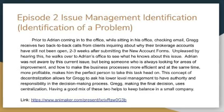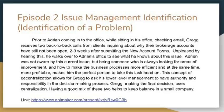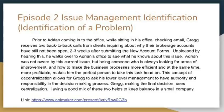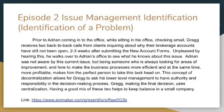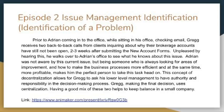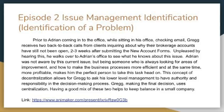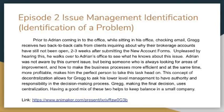Episode 2, Issue Management Identification, begins with Greg sitting in his office waiting for Adrian. He receives two back-to-back calls from clients inquiring about why their brokerage accounts still have not been opened two to three weeks after submitting the new account forms. He walks over to Adrian to see if he knows this is happening. Adrian is unaware of the issue, but being someone always looking for areas of improvement and efficiency, he makes the perfect person to take this task head-on. This concept of decentralization allows Greg to ask his lower-level management to have authority and responsibility in the decision-making process, while Greg making the final decision uses centralization. Having a good mix of these two helps to keep balance in a small company.